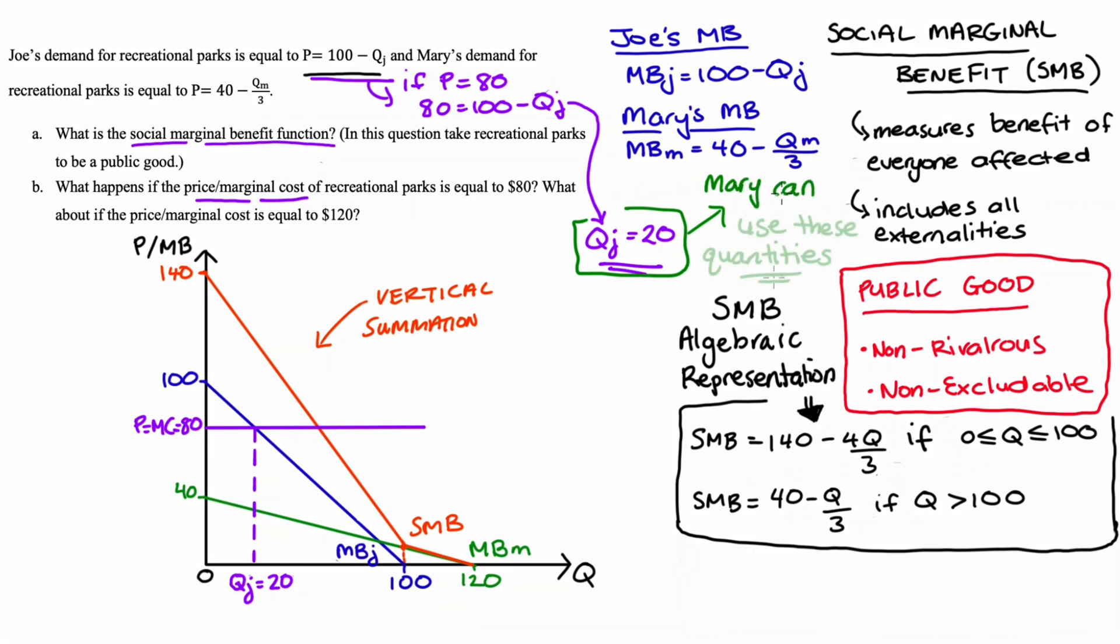So this situation is what we call free riding. Mary is benefiting from a purchase that she didn't actually contribute to, she didn't pay for.